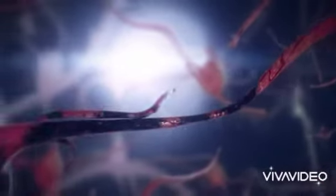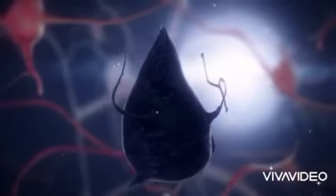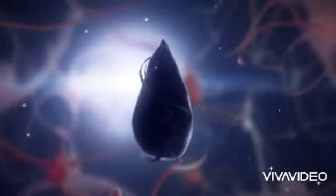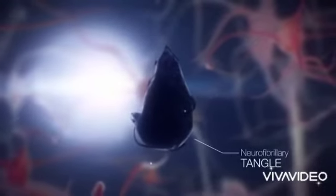Without the skeleton, the neurons degenerate and connections between the neurons are lost. The abnormal accumulation of tau filaments in a neuron creates neurofibrillary tangles and eventually causes the death of the neuron.